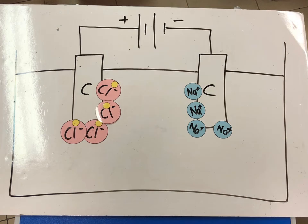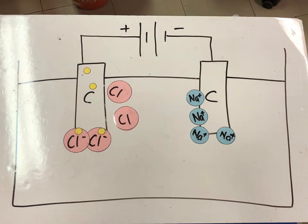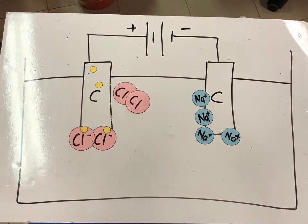At the positive electrode, each chloride anion will lose an electron and be oxidized to a chlorine atom. A second chloride anion is then oxidized to another chlorine atom. Two chlorine atoms are combined together through a covalent bond and form a chlorine molecule, diffusing off as chlorine gas.